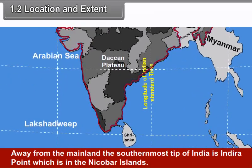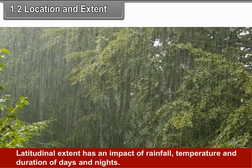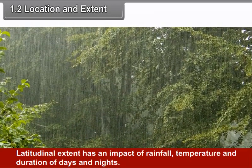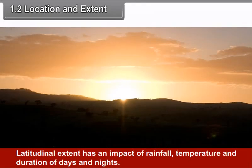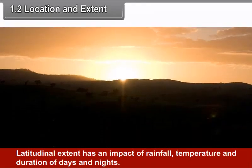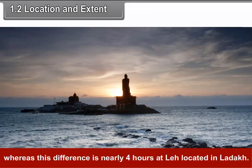Thus, its latitudinal extent is 29 degrees 2 minutes 25 seconds. Away from the mainland, the southernmost tip of India is Indira Point, which is in the Nicobar Islands, located at 6 degrees 45 minutes north latitude. Latitudinal extent has an impact on rainfall, temperature and duration of days and nights.